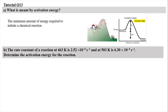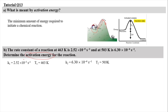For part B, the rate constant of a reaction at 463 K is 2.52 × 10⁻⁵ s⁻¹, and at 503 K is 6.3 × 10⁻⁴ s⁻¹. We have to determine the activation energy for the reaction. We use the Arrhenius equation derived for two different temperatures: ln(K1/K2) = (Ea/R) × (1/T2 − 1/T1). Be careful — K1 and T1 correspond to each other, with T1 at the higher temperature end.